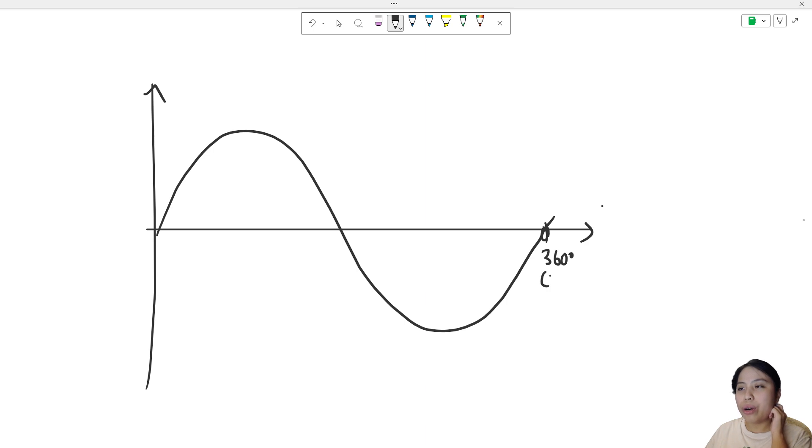Or in terms of radians, this is what we call 2π radians. So half of that would then be 180 degrees, also known as π.